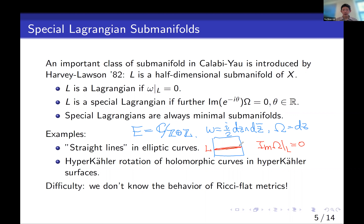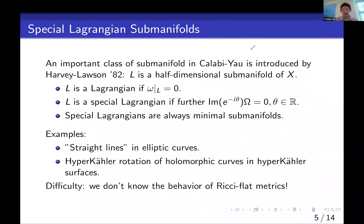There is another important source of examples of special Lagrangians coming from hyperkähler surfaces. If you start with a hyperkähler surface and start with some holomorphic curves and do the so-called hyperkähler rotation, that will give you some special Lagrangians, which I'll explain in the next slides. But in general we have very few examples of special Lagrangians, mainly because we don't know the behavior of Ricci-flat metrics in general.